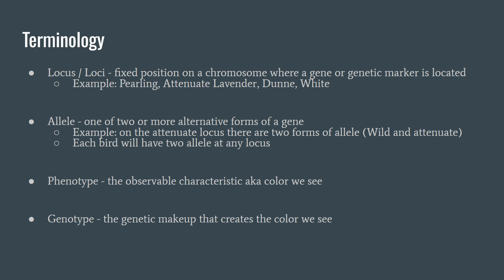Phenotype is going to be the observable character that we see with our own eyes, which is the color. An example of a phenotype would be the names of the varieties including pearl, royal purple, slate, and violet. The genotype, though, refers to the genetic makeup that actually creates the color we see. It will be a combination of all the loci and alleles that bird has that creates the color we see. Knowing the parentage of a bird and the colors that the parents were can help you determine what the genotype of that bird is.